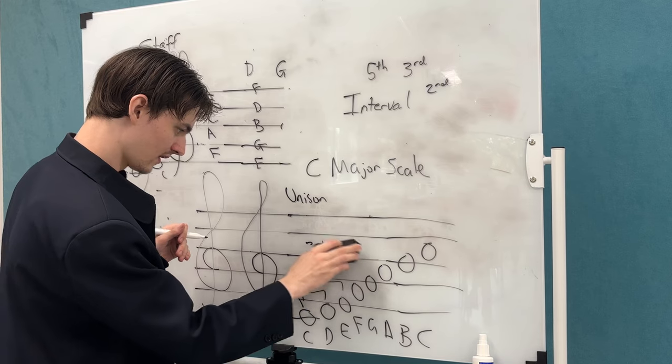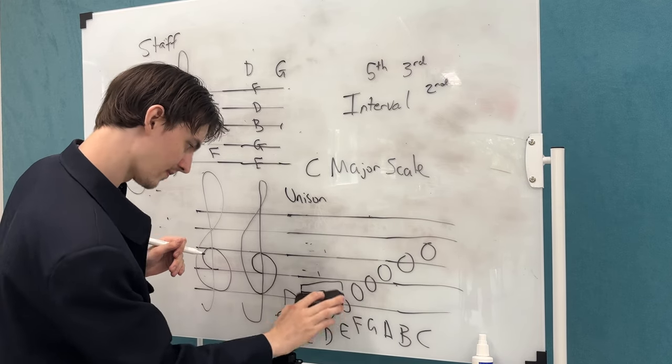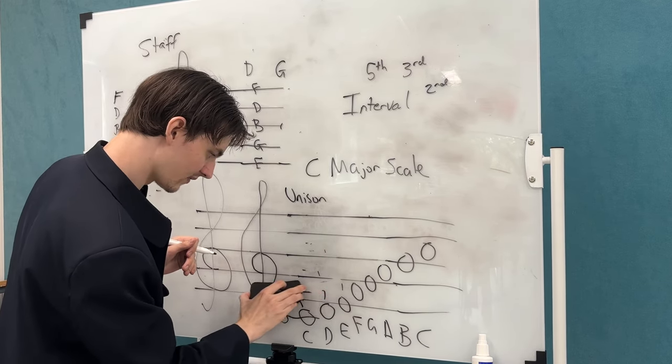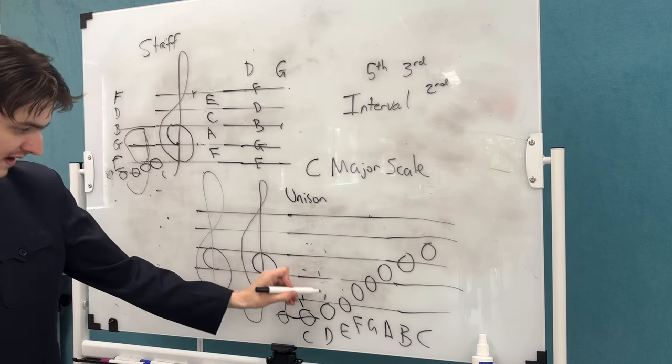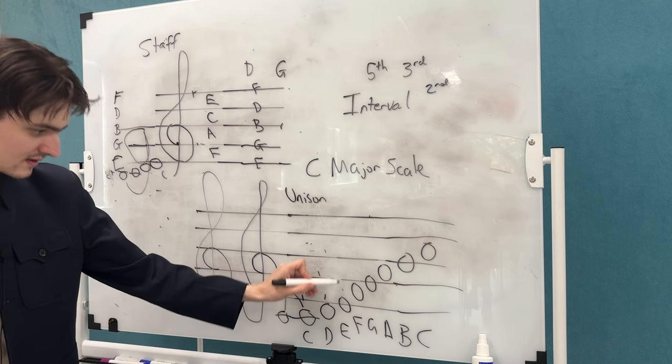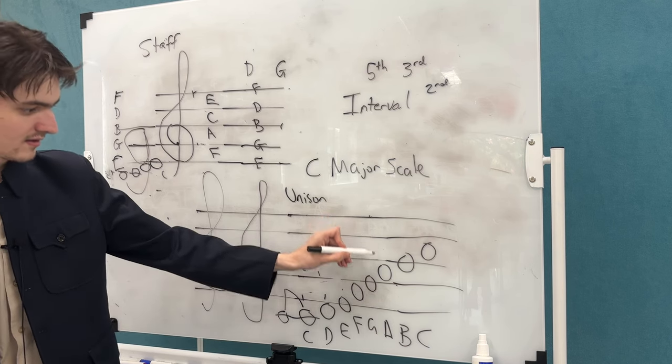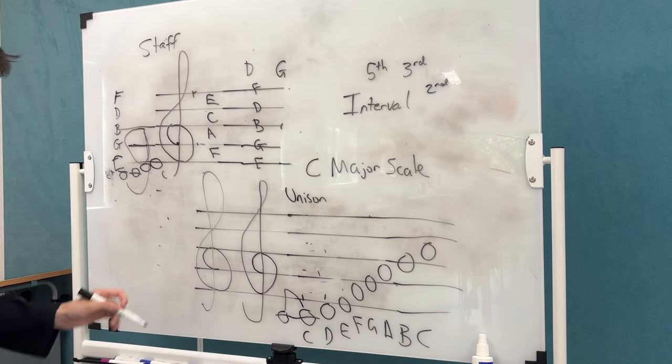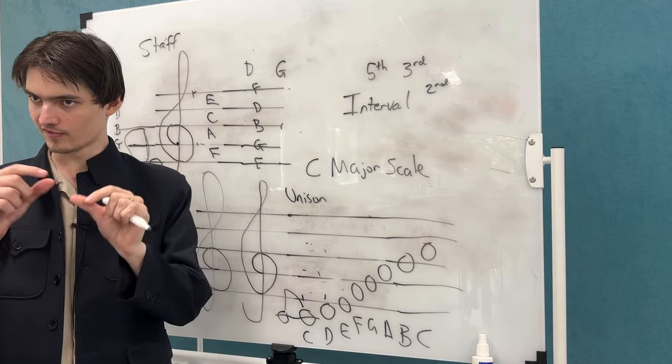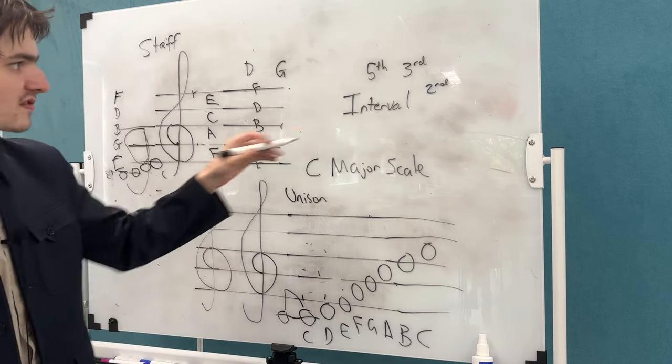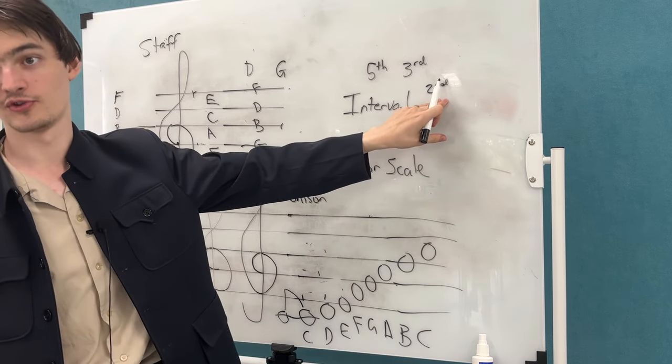So in a simplistic sense, we can say that the interval between each note in this scale is a second. Because you can see that there's a second there, a second there, a second there, second there, like so. But that doesn't fully describe the scale. Because scales have little subtleties within them. And there's not just one kind of second. There are two kinds of seconds.